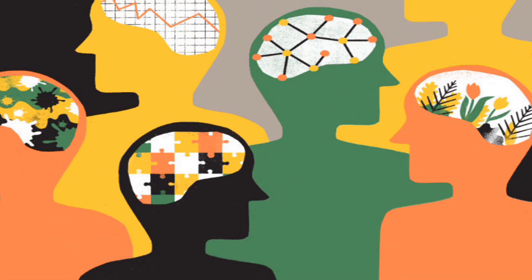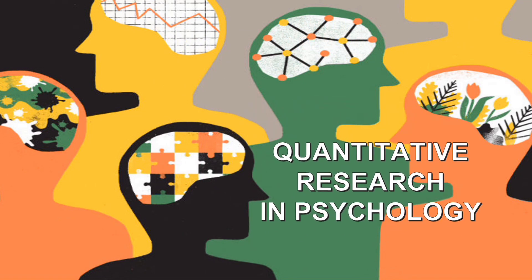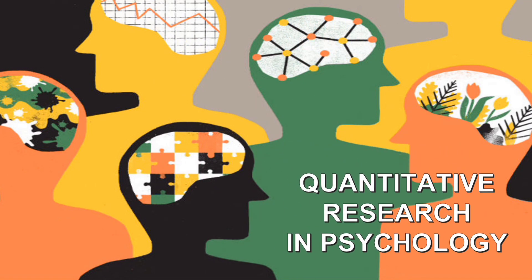Number 9: Psychology. Quantitative psychologists study and develop the methods and techniques used to measure human behavior and other characteristics. Their work involves the statistical and mathematical modeling of psychological processes, the design of research studies, and the analysis of psychological data.